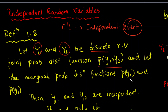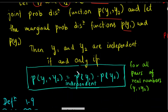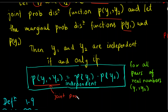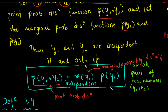The marginal probability distribution functions are p(y1) and p(y2). The joint probability distribution function is suitable for the marginal distribution function. The marginal probability distribution of y1 and the marginal probability distribution of y2 can be used to validate the equation for random variables y1 and y2.